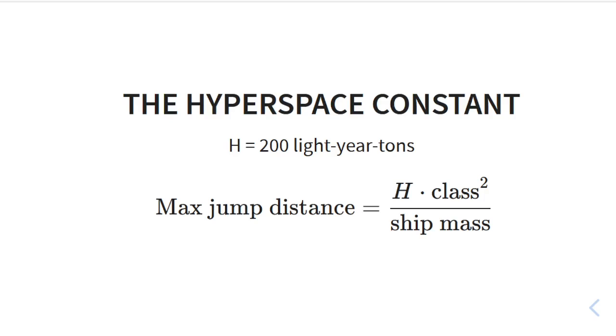And it tells you how far you can jump. Maximum jump distance depends on the class of your hyperdrive. In fact, it depends on that twice because it's proportional to the square, and it's divided by ship mass. So fairly unsurprisingly, bigger drives make you jump further and bigger ships will jump smaller distances. But of course, a bigger ship has room inside it for a bigger hyperdrive, so it mostly evens out.